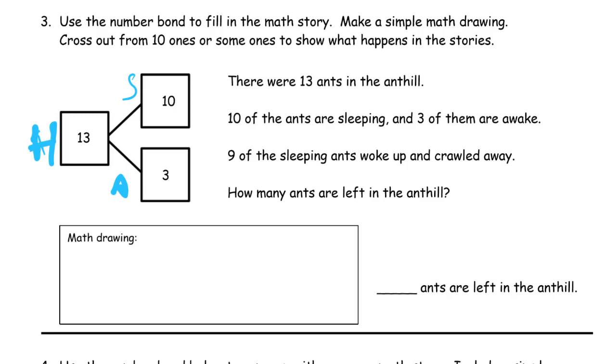Nine of the sleeping ants woke up and crawled away. So here's our math drawing. We need our ten - one through ten. And then our three - one, two, three. So nine of the sleeping ants crawl away. Those are the sleeping ants and these are the ones that are awake. So those are gone. There's three here and one more is four. Four left on the ant hill.